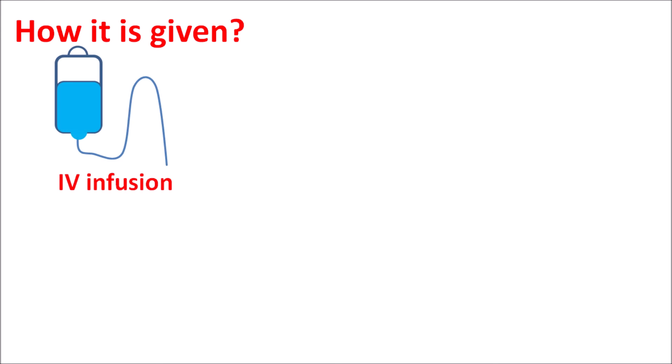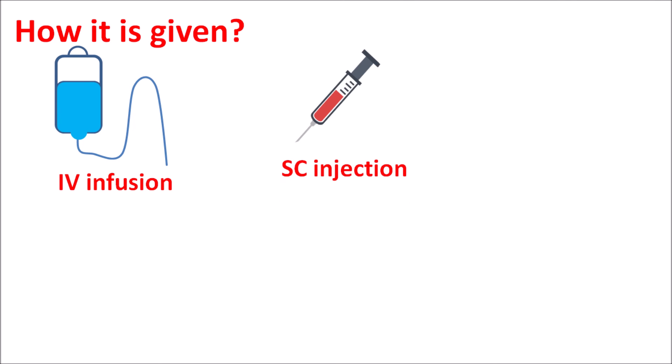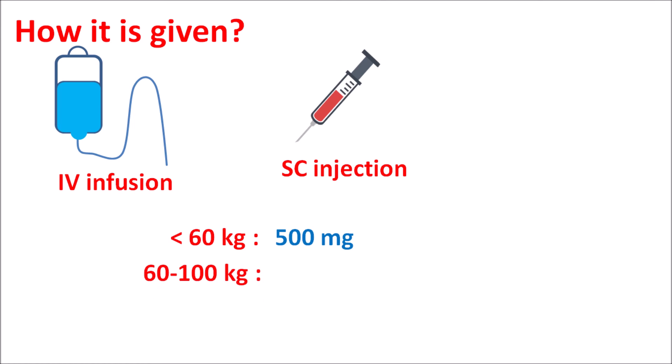Abatacept is available as an IV infusion as well as subcutaneous injection. The dose is based on the patient's body weight. If body weight is less than 60 kg, the dose is 500 mg. If body weight is 60 to 100 kg, the dose is 750 mg. If body weight is greater than 100 kg, the dose can be up to 1000 mg per day. For IV infusion, the drug can be repeated on the second and fourth week of treatment. For subcutaneous injection, it can be given every one week.